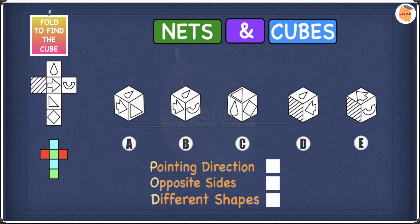So this is a nets to cubes example. I've got another video on cubes to nets so go check that video out. In this example we are going to use POD to help us. P stands for pointing direction, O stands for opposite sides, and D stands for different shapes.